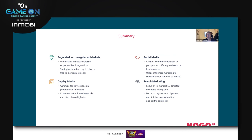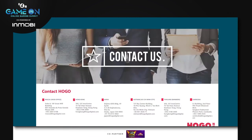As a summary: understand the difference between regulated and unregulated markets, opportunities and regulations. Use social media to create a community relevant to your products — you can create an amazing database of leads. Utilize influencers to showcase your platform to the masses. Run display media and advertising optimized specifically for your goals — conversions or first-time deposits. Consider traditional and non-traditional high-risk networks, and really focus on SEO to decrease your reliance on paid advertising and focus more on organic content.